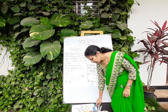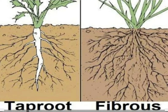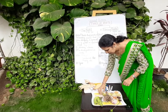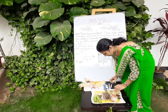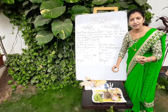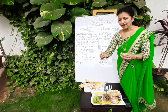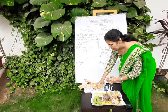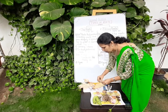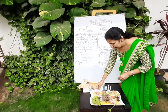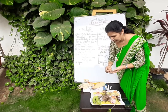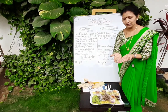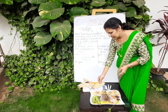Now I will show you the examples. See, these are groundnuts. If you divide these groundnuts into two parts, they can be divided easily into two equal parts.